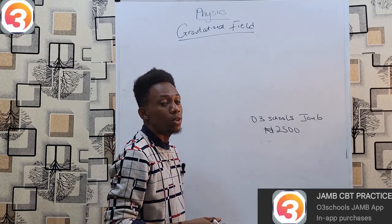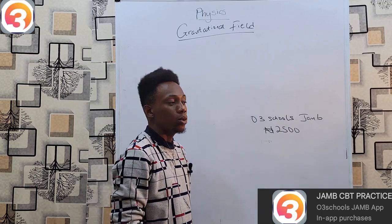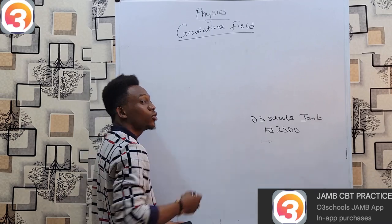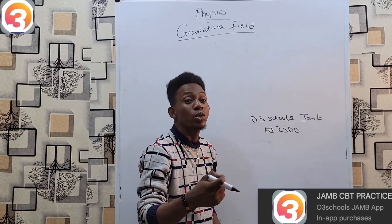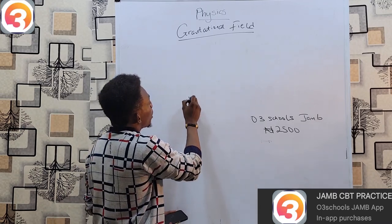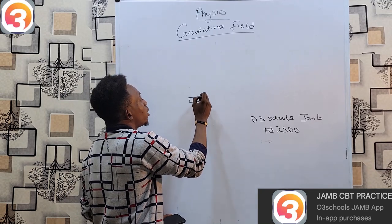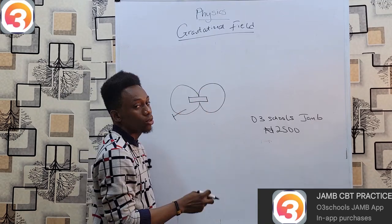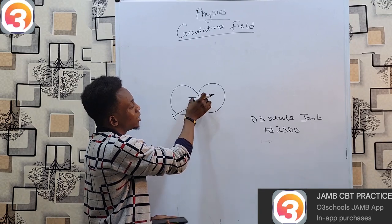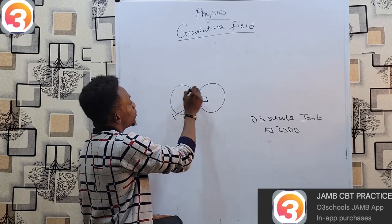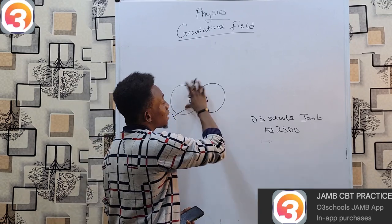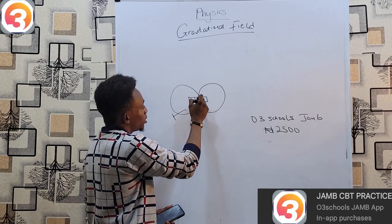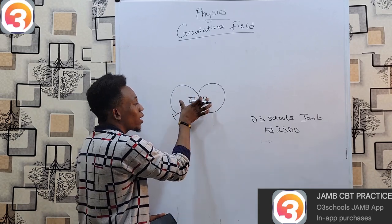A field is simply a region of space around an object where its effect can be felt. For example, if we take the most common example, the magnet, for a certain region around this magnet, if I bring a nail into that region, it can express attraction between the nail and the magnet.